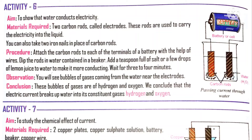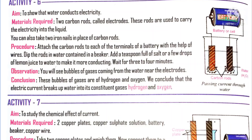We dipped 2 carbon rods in the electrolytic solution — the solution which has ions. When the battery is on and the rods are connected, we can see bubbles arising. These gases are called hydrogen gas and oxygen gas. Hydrogen gas evolves at the cathode and oxygen gas evolves at the anode. Water has 2 ions: hydrogen ion and hydroxyl ion. The positive hydrogen ions migrate to the negative rod, that is the cathode, and hydroxyl ions migrate to the positive rod, that is the anode, where oxygen gas is formed.